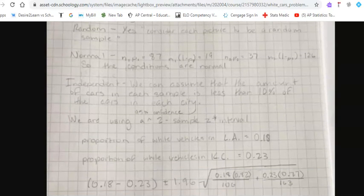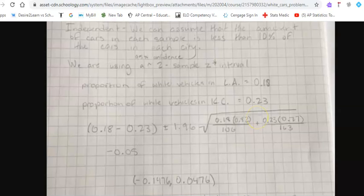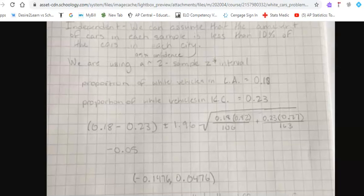She correctly identifies a two-sample interval, and she could improve that by saying of proportions. She does provide your p-hats, and one thing I'd also like to see you provide is the actual formula. She does a nice job providing the values inside the formula, but let's also provide the formula as well.